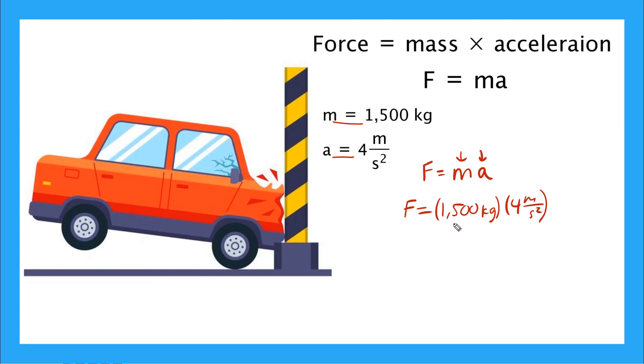And now all we have to do is multiplication. So 1500 times 4 is equal to 6000. So the force is going to be equal to 6000, and these units turn to newtons. So the automotive engineers would know that the force exerted on this wall right here is going to be 6000 newtons.